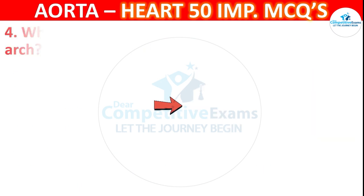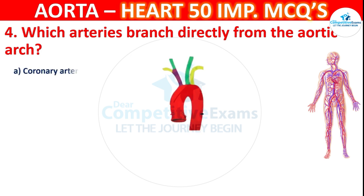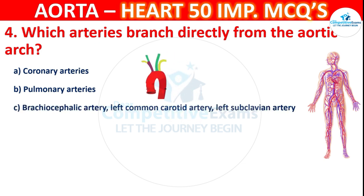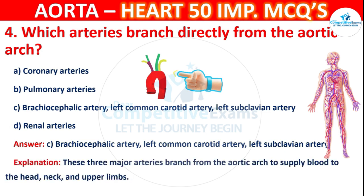Question number 4: Which arteries branch directly from the aortic arch? Options are coronary arteries, pulmonary arteries, brachiocephalic artery, left common carotid artery, or left subclavian artery. The correct answer is C — the brachiocephalic artery, left common carotid artery, and left subclavian artery. These three major arteries branch from the aortic arch to supply blood to the head, neck, and upper limbs.